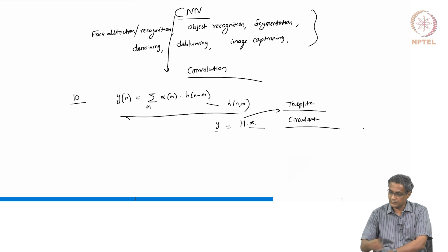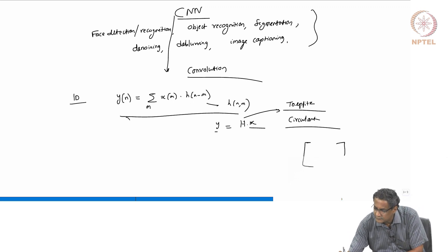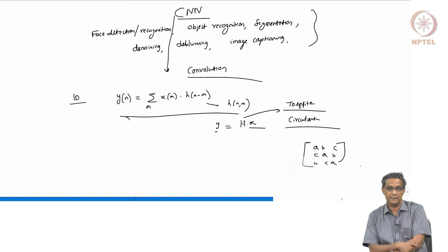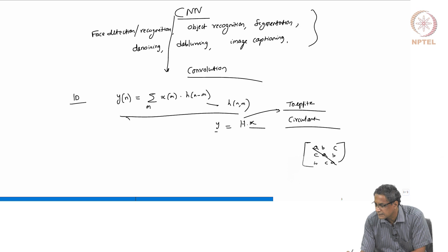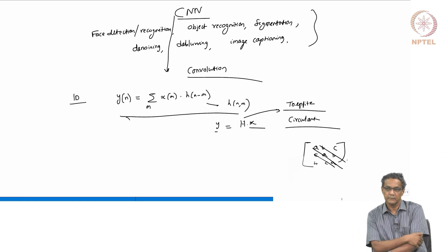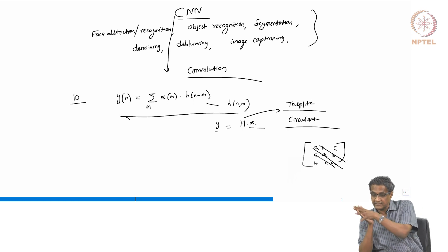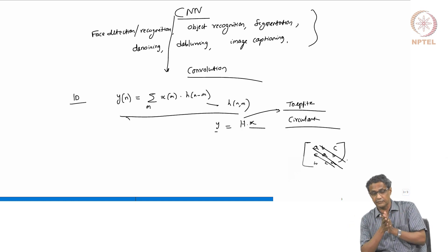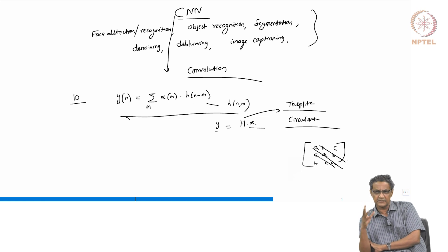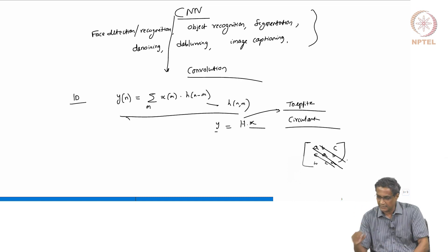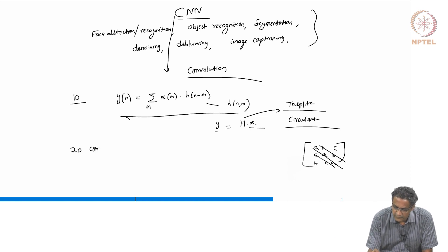Do you know that the matrix that diagonalizes this H, if it is a circulant, is actually a DFT matrix? For example, a circulant matrix looks like: first row [A, B, C], next row [C, A, B], next [B, C, A]. The DFT has the unique power to diagonalize a circulant matrix — that is how we talk about going into the Fourier domain in signals and systems. Now, when you talk about a 2D convolution, this is all about 1D convolution which we understand very well. The moment you go to 2D convolution, the main thing that strikes you is: where is all this structure coming from?